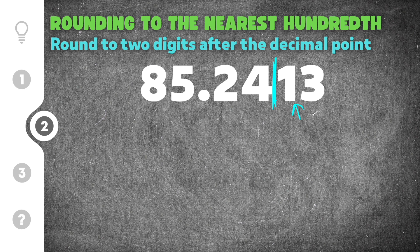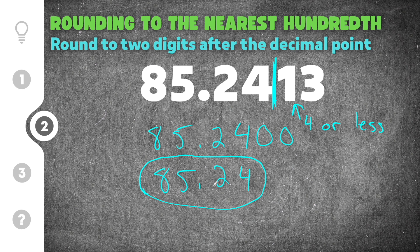In this case, the one is four or less, which means the four stays the same. It's not going to round up. We write 85.24 because that four stays the same. All the digits after the four go to zero, but your final answer doesn't include those zeros because they represent nothing. So our final answer is 85.24.